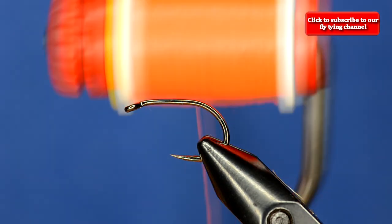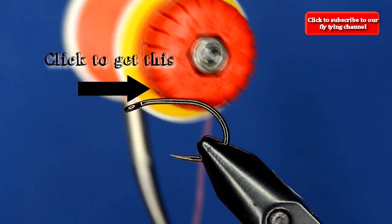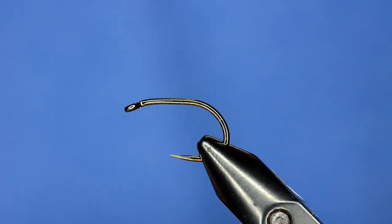But also you'll see that we're using a new bobbin. This is the Stonfo. It's like a disc drag thinger. It feels really good in your hand. I've been tying with it quite a bit lately and I like it a lot.